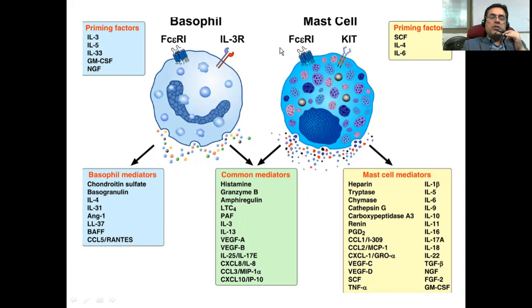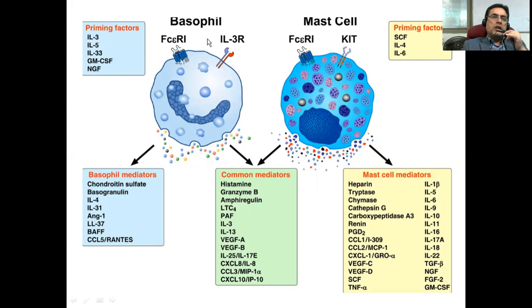If you look at the different types of receptors — the activating receptor for the mast cell is KIT, and the activating receptor for the basophil is interleukin-3 receptor. There's a difference in the priming or activating factors. For the mast cells: stem cell factor, interleukin-4, interleukin-6. For the basophil: interleukin-3, interleukin-5, interleukin-35, GM-CSF, NGF, et cetera. So there's a difference in the priming or activating factors for the mast cells versus the basophils.